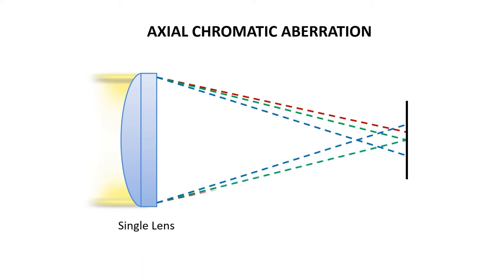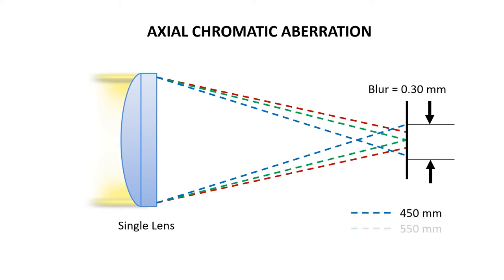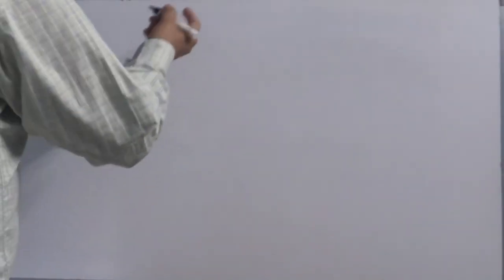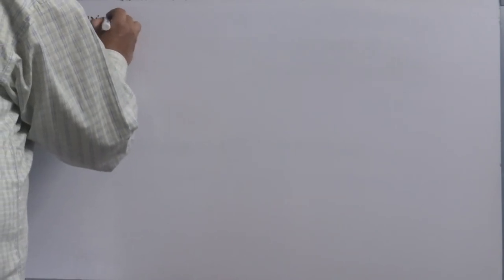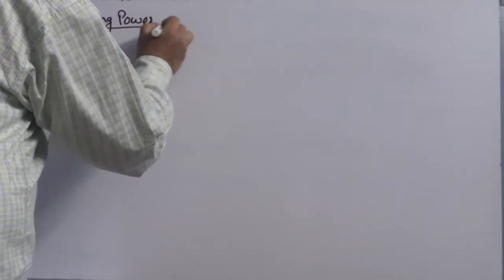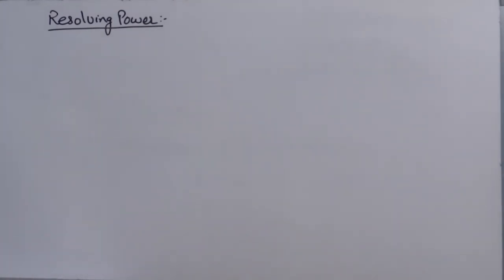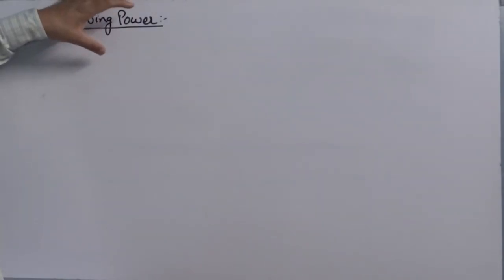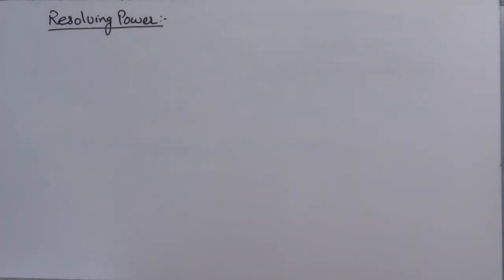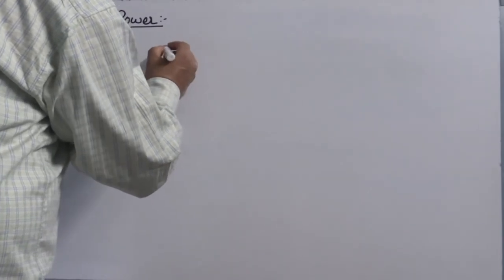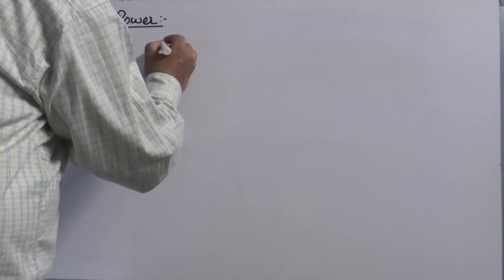Now let's talk about resolving power. Resolving power is the ability of an optical instrument to separate or resolve the images of two nearby objects which cannot be seen as separate by the naked eye.